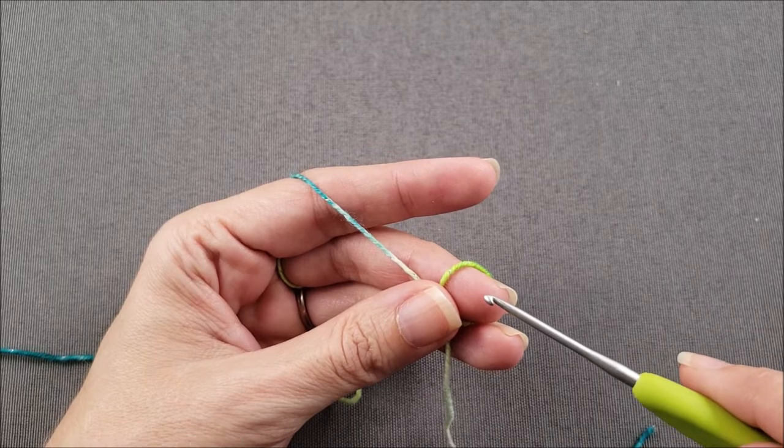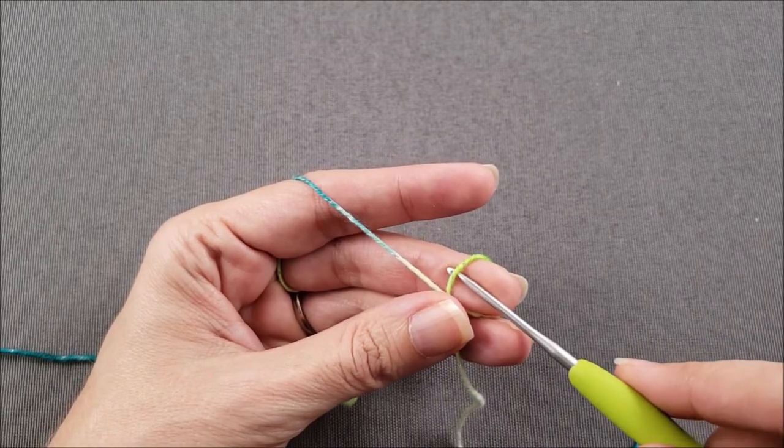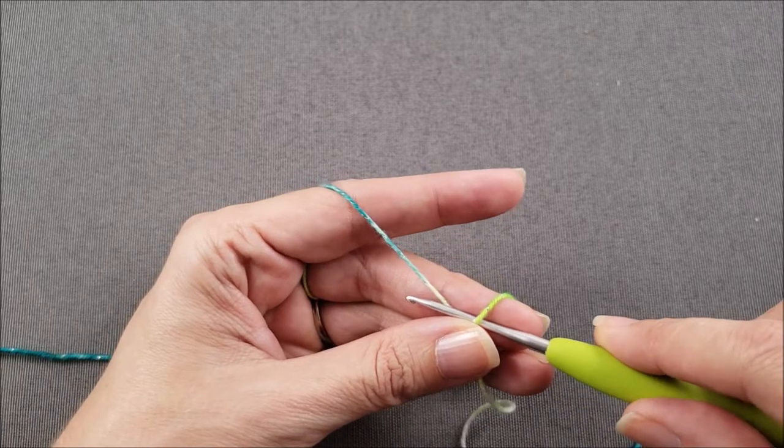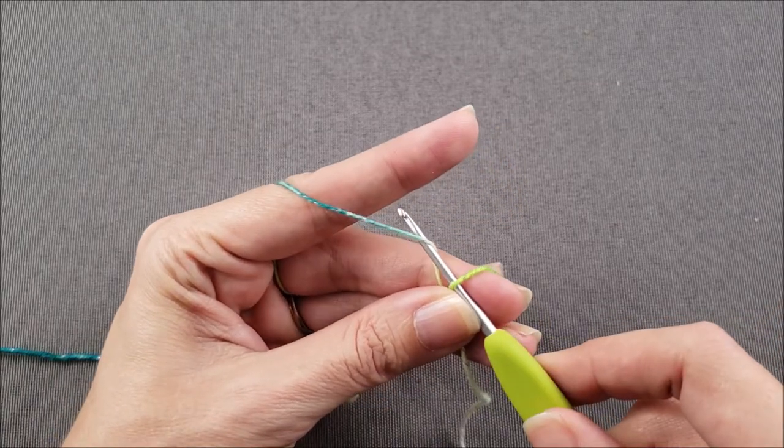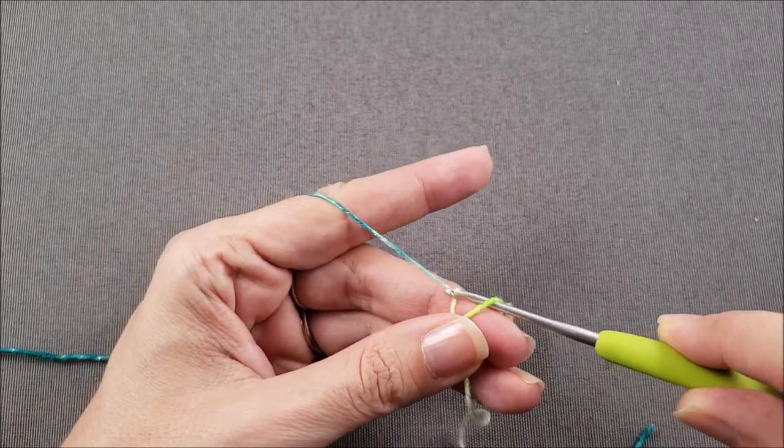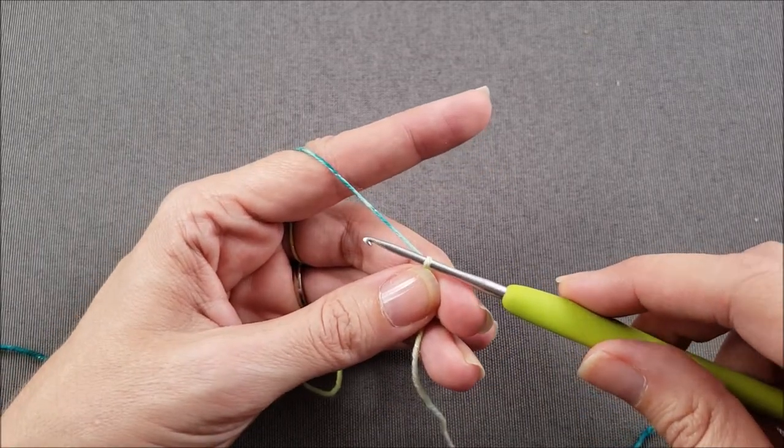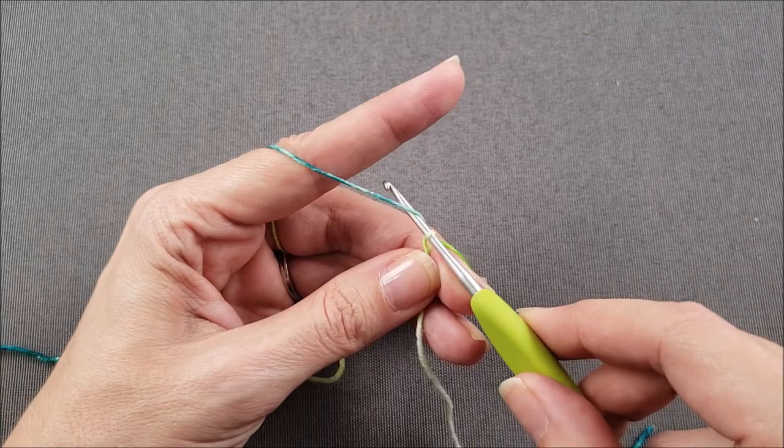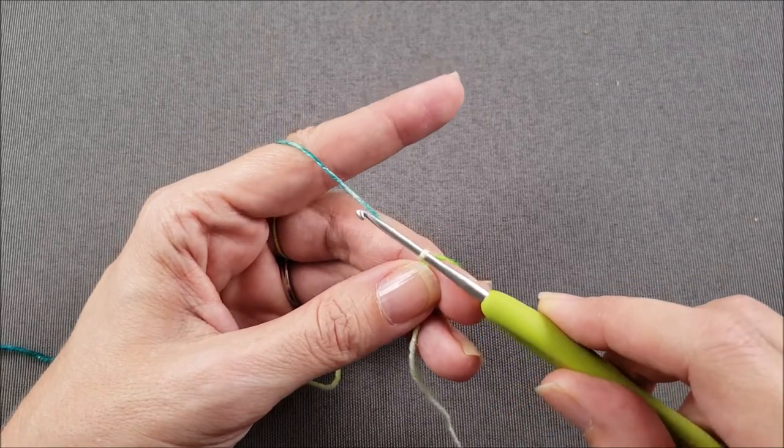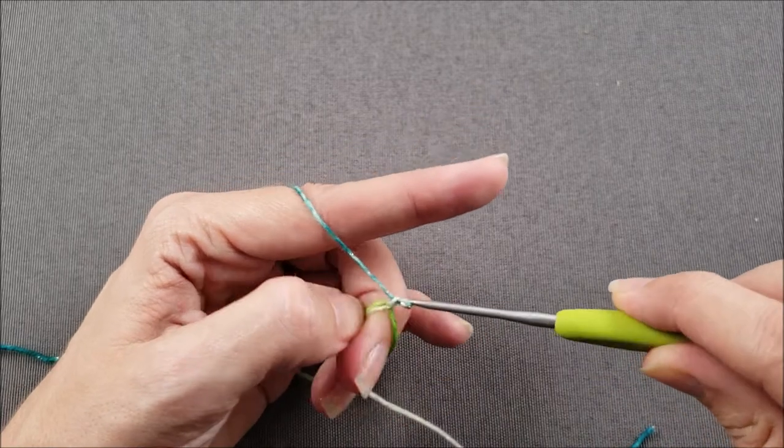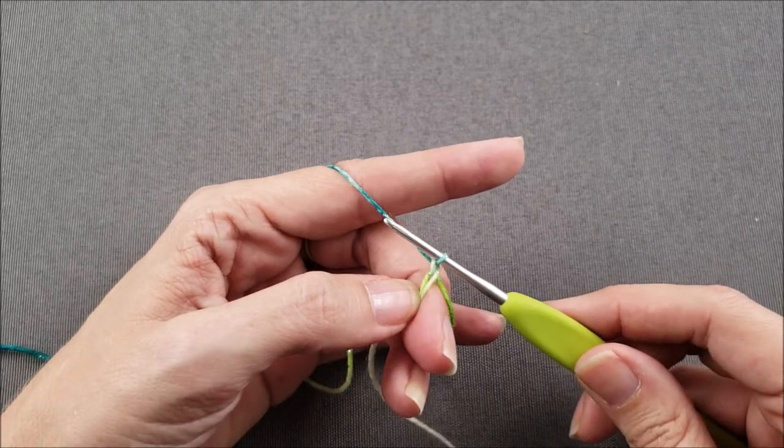So now to begin casting on, we're going to put our crochet hook down through the ring to the left of the working yarn, under the working yarn, hook it and pull it through the ring, and to the left of the working yarn, under the working yarn, hook it and pull it through one loop and now we've cast on one stitch.